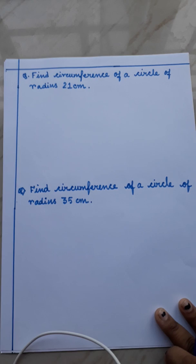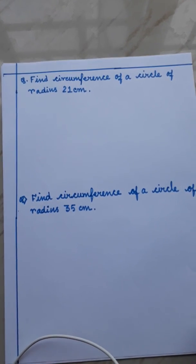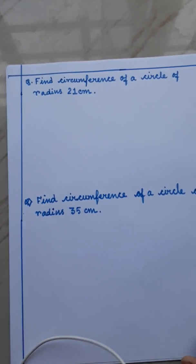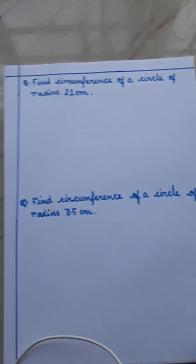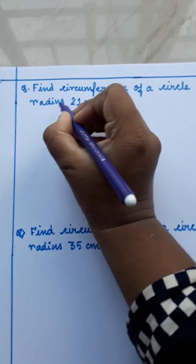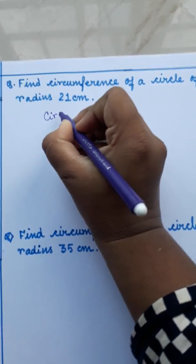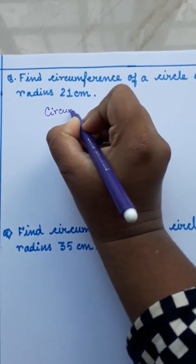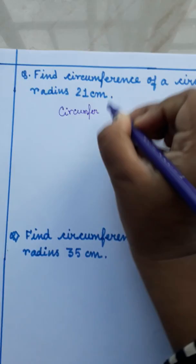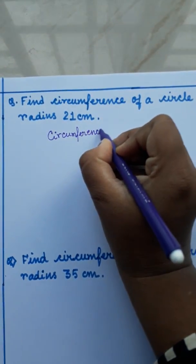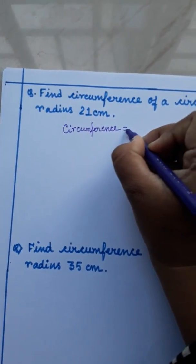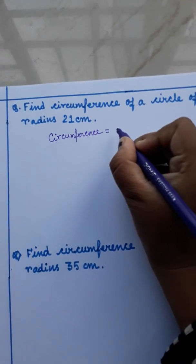Here the sum number 2. Find circumference of a circle of radius 21 cm. As I have told you, at first we have to write down the formula. That is circumference equals to, what is the formula? 2 into pi into r.